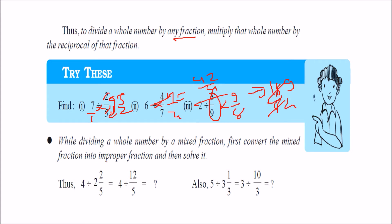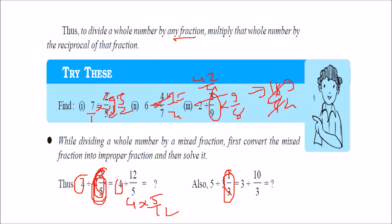While dividing a whole number by a mixed fraction, first change the mixed fraction into an improper fraction. For example, 2 and 2 by 5: 5 into 2 is 10, plus 2 is 12 by 5. So 4 divided by 12 by 5 is nothing but 4 into 5 by 12. Similarly, 5 divided by 3 and 1 by 3: change 3 and 1 by 3 to improper — 3 into 3 is 9, plus 1 is 10 by 3. Then 5 divided by 10 by 3 is 5 into 3 by 10, giving 3 by 2.